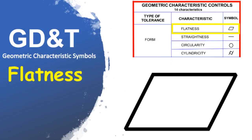Flatness is a specified surface having all elements in one plane. Flatness tolerance is always less than the dimensional tolerance associated with it. Flatness can be measured using an indicator run across the surface of the part if only the reference feature is held parallel.